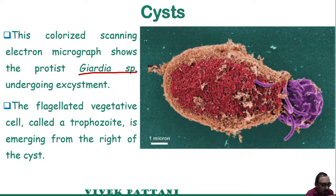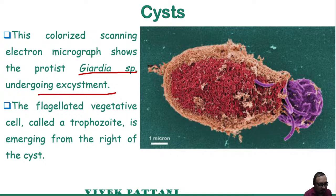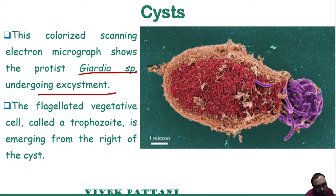Please have a look at the photograph of the cyst of a Giardia species which is still undergoing the encystation process. A flagellated vegetative cell called a trophozoite is emerging from the right of the cyst — the blue-colored one. The covering shown here is of Giardia, which causes disease in human beings.